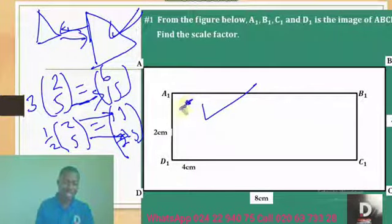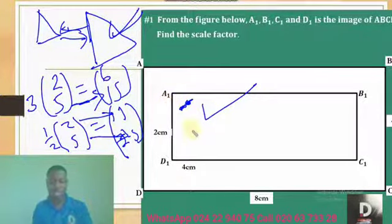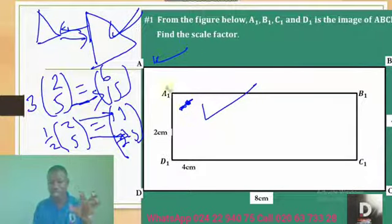If this happens to be the image, the A1, B1, D1, C1 is the image of ABC. It means it has reduced from the original, which is the bigger shape to the smaller shape. Therefore, it's a reduction.